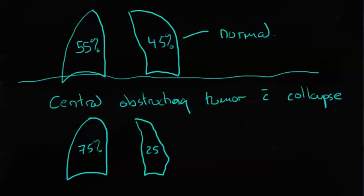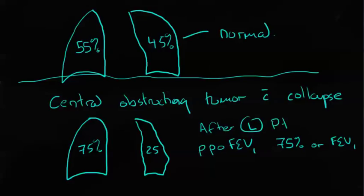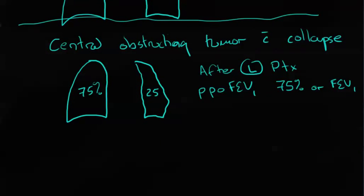This 25% is the side that's getting removed. So to calculate the predicted postoperative FEV1, we would take 75% of their FEV1 because that's what's going to be left after a left pneumonectomy. After a left pneumonectomy, the predicted postoperative FEV1 would be 75% of their existing FEV1.